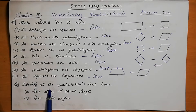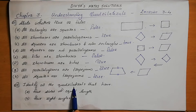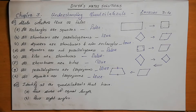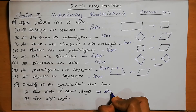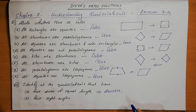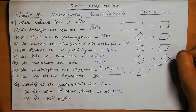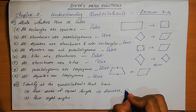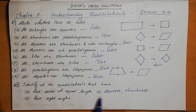Question number 2: Identify all the quadrilaterals that have four sides of equal length. A quadrilateral is a four-sided figure. We need to identify which four-sided figures have all four sides equal. For a square, all four sides are equal. For a rhombus, all four sides are also equal. So the answers are square and rhombus.